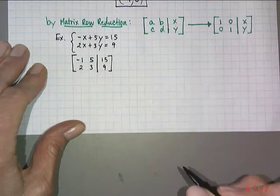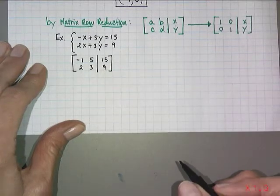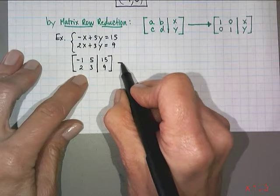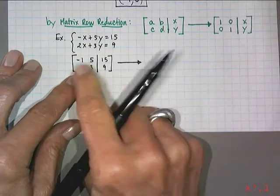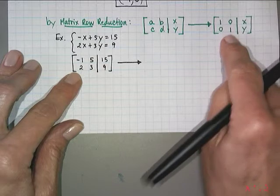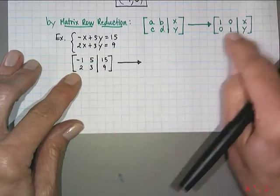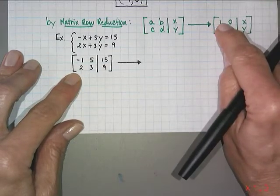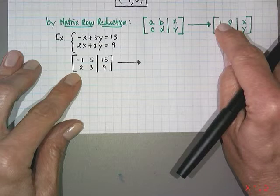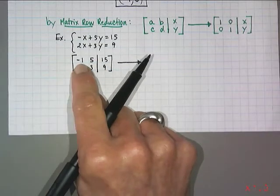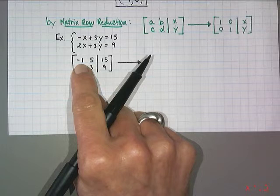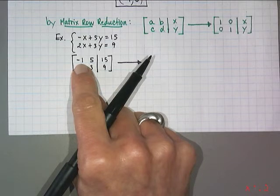What I said is we're going to change by changing our rows, we're going to morph this matrix into the identity matrix. Now your game plan is to get the ones, or get a one somewhere very quickly. For obvious reasons we have a one in the row one column one, or a negative one rather. It'd be really easy to make it a positive one just by dividing the entire first row by negative one or multiplying by negative one.